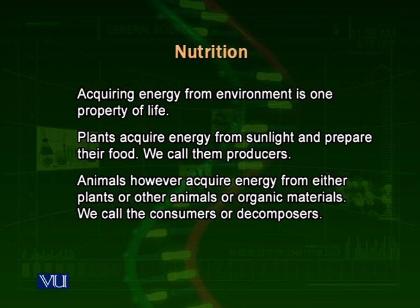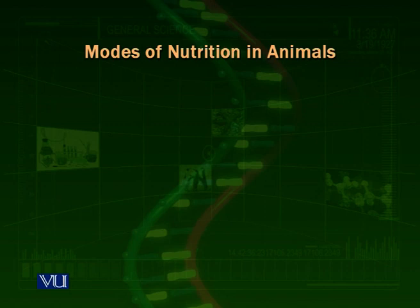Animals sometimes also acquire energy by eating dead organic matter — dead organisms such as dead plants, branches, leaves present on the soil, or old dead organic matter mixed with the soil. According to their energy-acquiring habit, if they eat other plants or animals, we call them consumers. We call them decomposers if they decompose or break up the dead organic matter. Many microorganisms like bacteria are also decomposers.